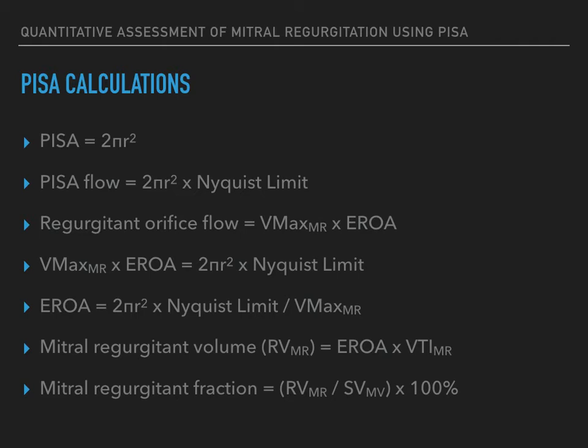The maximum velocity of blood at the mitral regurgitant orifice can be measured by continuous wave Doppler. Flow at the orifice would thus be effective regurgitant orifice area multiplied by the mitral regurgitant peak velocity. Using the continuity principle, flow would be the same at the orifice and within the PISA. Thus, effective regurgitant orifice area multiplied by the mitral regurgitant peak velocity equals 2πr² multiplied by the Nyquist limit, and effective regurgitant orifice area therefore equals 2πr² multiplied by the Nyquist limit divided by the mitral regurgitant peak velocity.